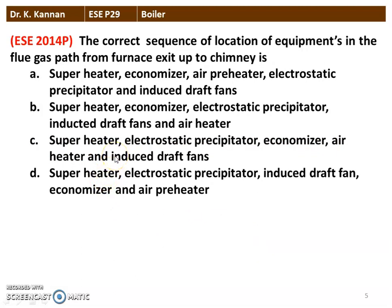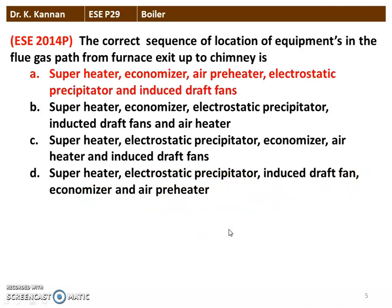Next question again from the 2014 question paper: the correct sequence of equipment in the flue gas path from the furnace exit up to the chimney. The options list various orderings of superheater, economizer, air preheater, electrostatic precipitator, and induced draught fan. The correct option is: superheater, economizer, air preheater, electrostatic precipitator, and induced draught fan. This is the correct order of equipment from the exit of the furnace to the chimney.